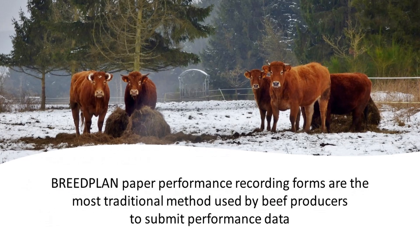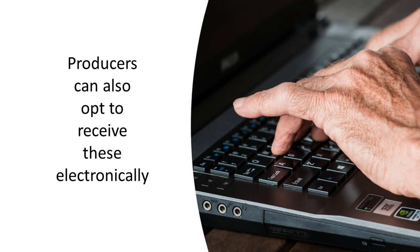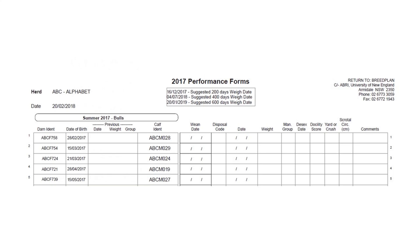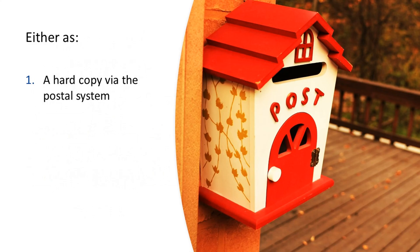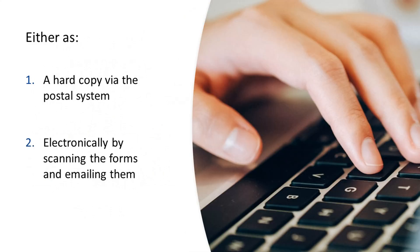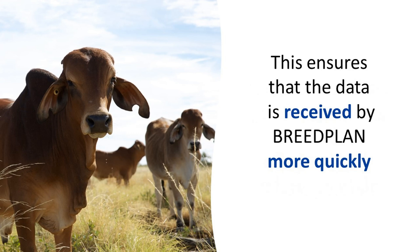BreedPlan paper performance recording forms are the most traditional method used by beef producers to submit performance data. Using this method, paper performance forms are forwarded to the producer. Beef producers can nominate to receive these forms electronically. Each form will list all calves within the herd for a particular calving year, season and sex. The producer can then enter the performance information of their animals into the relevant columns. Completed forms should be sent back to your BreedPlan processing centre either as a hard copy via the postal system or electronically by scanning the forms and emailing them. BreedPlan recommends that producers return these forms electronically where possible, as this ensures that the data is received by BreedPlan more quickly.